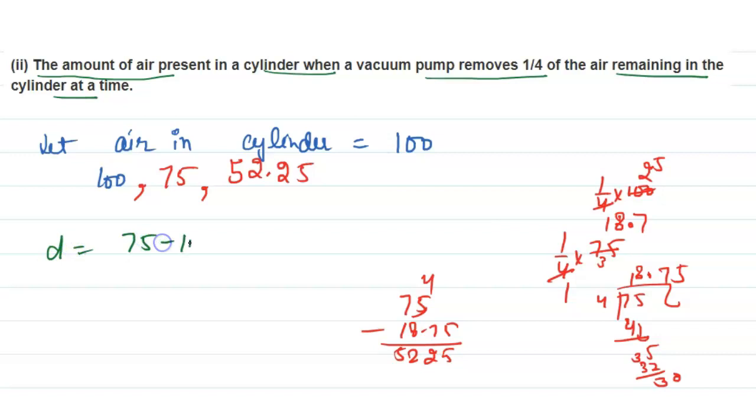The difference is 75 minus 100, which equals minus 25. And the second difference is 56.25 minus 75, which equals minus 18.75. So D1 is not equal to D2. So we can say that this situation is not an AP series.